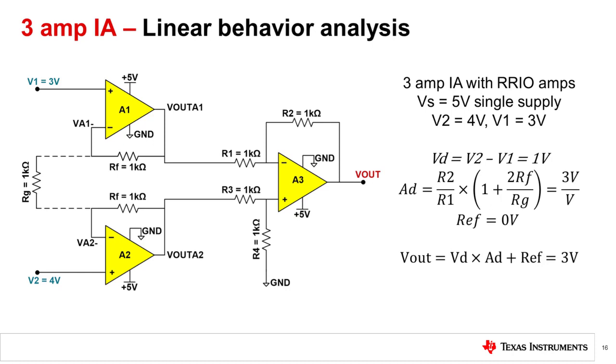Let us assume the following example. We have a 3-amp IA powered by a 5-volt single supply. Assume all amplifiers are rail-to-rail input and output. V2 is equal to 4 volts, and V1 is equal to 3 volts. The differential voltage is V2 minus V1, or 1 volt. The gain of this circuit is 3 volts per volt, following the equation we derived earlier. The reference voltage in this example is grounded. Plugging this into the output equation of a 3-amp IA, we get Vout is equal to Vd times Ad plus reference, which reduces to 3 volts.